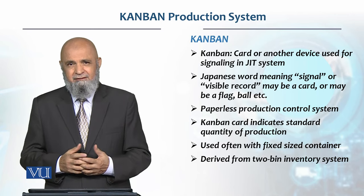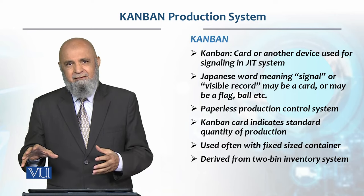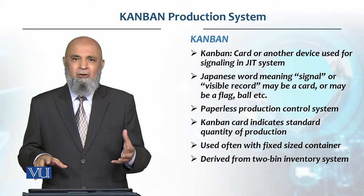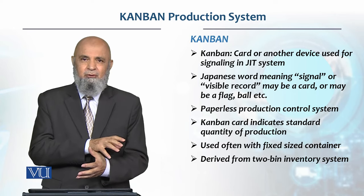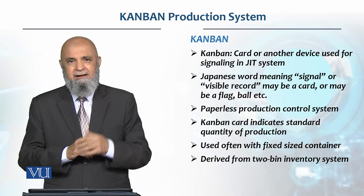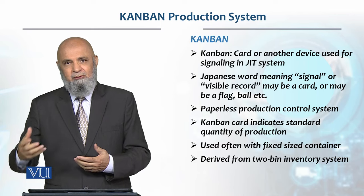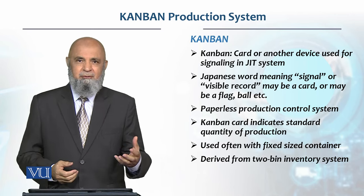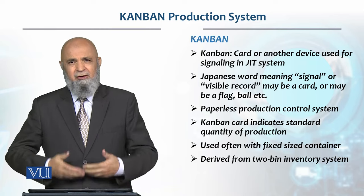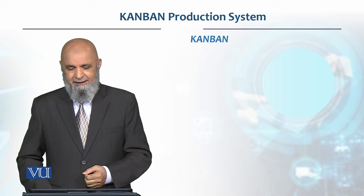It is basically a two-bin inventory system, as we discussed. When the material in one bin is used up, production starts and an order is placed. You begin using material from the second bin, so that by the time the second bin is empty, material from the first bin has been received — and so on. This is how Kanban operates.